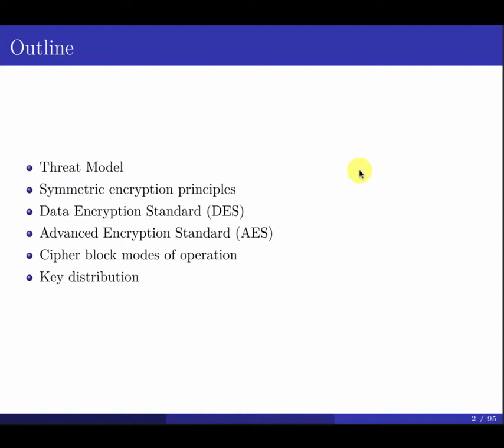Today we're going to talk about symmetric cryptography. I'm going to revisit some components — first the threat model, which defines assumptions about what the bad guy can do, what they can access, and what computational power they have. Then we'll cover symmetric encryption principles, followed by two examples: Data Encryption Standard (DES) and Advanced Encryption Standard (AES), which is still used today.